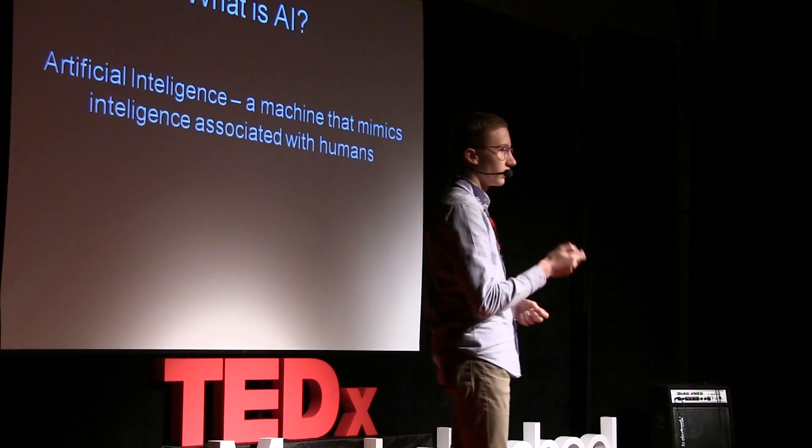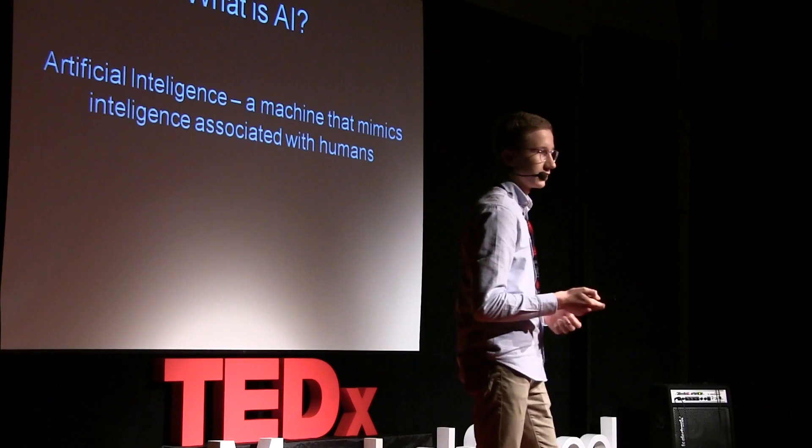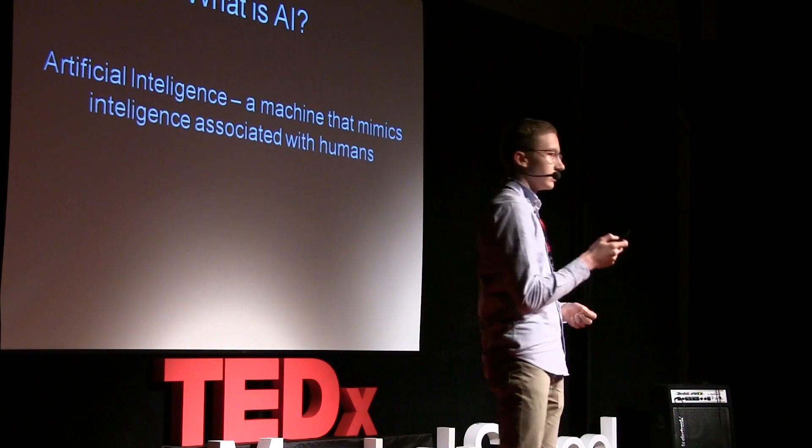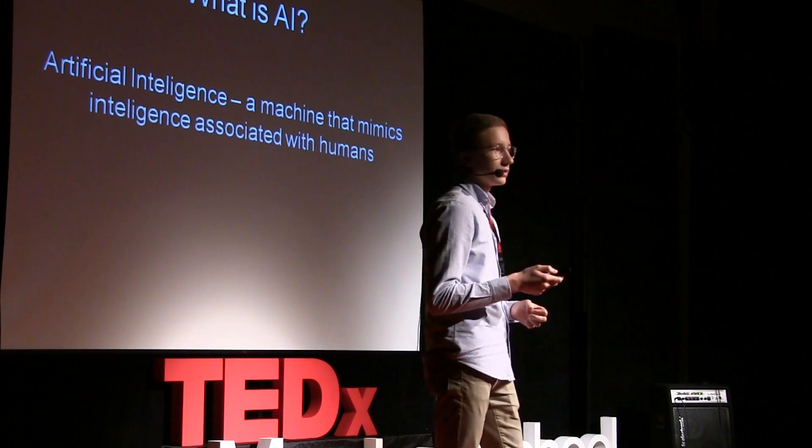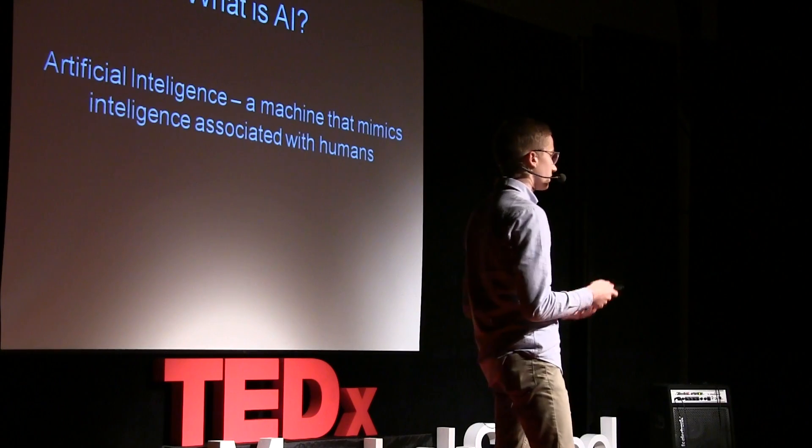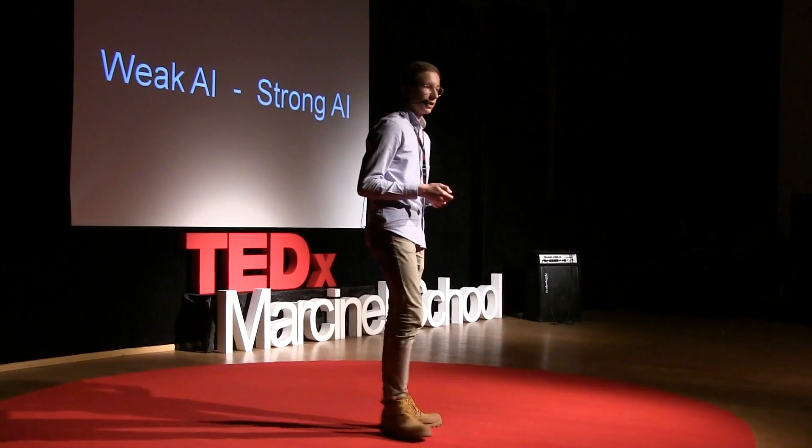But first, we need to define what is artificial intelligence. AI is a machine that behaves intelligently like a human — it can be by walking around or having a conversation with somebody, or it can understand its surroundings. So we can divide artificial intelligence into two groups: weak AI and strong AI.